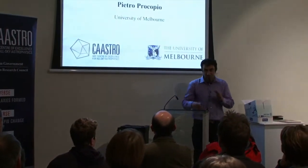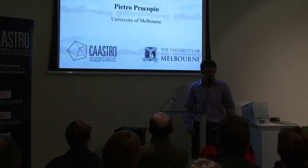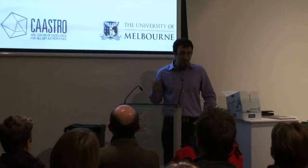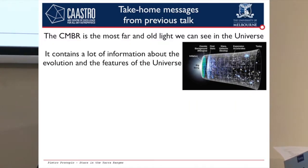Thank you everybody. My name is Pietro. Please feel free to interrupt me whenever you have a question or something is not clear. So we are going to talk now about foregrounds in the context of CMBR experiments. CMBR, which I explained in my previous talk, is the cosmic microwave background radiation. This is a very, very old light — it's the first light of our universe. It's a light that is almost 13 billion years old, really the first picture of our universe. This light contains a lot of information about our universe, and we use it for constructing physical models and planning our missions.